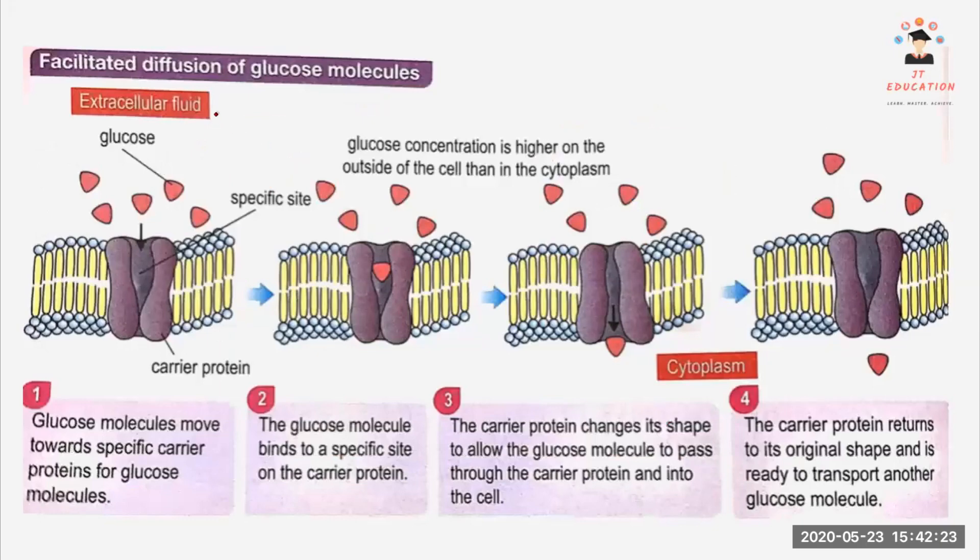This is a figure of facilitated diffusion of glucose molecules. We have a lot of glucose outside of the cell and then we have a carrier protein. Glucose molecules will move towards the specific carrier protein for glucose. Each carrier protein only carries specific types of molecules. This is a glucose carrier protein, it will transport only glucose.